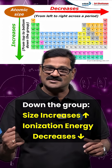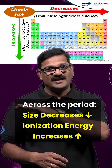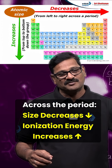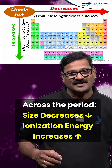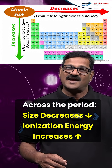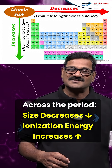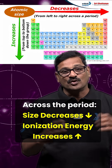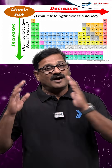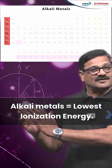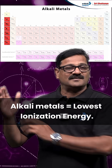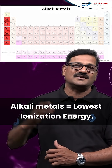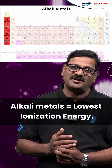Across the period in the periodic table, from left to right, the size of the atom decreases and ionization energy increases. The alkali metals are the group with the lowest ionization energy in the periodic table.